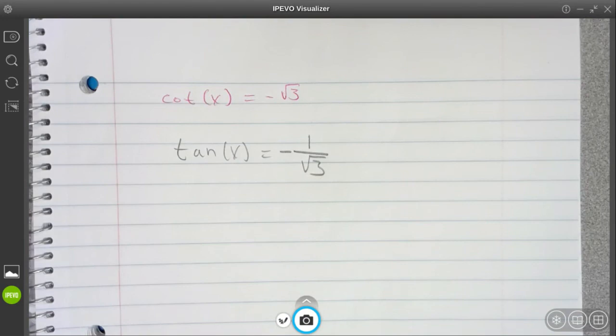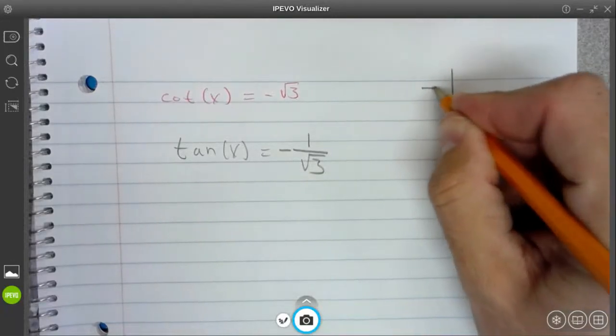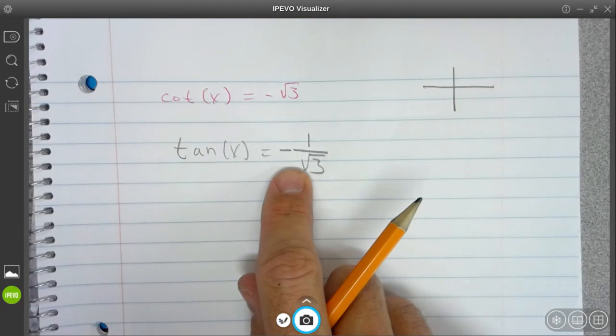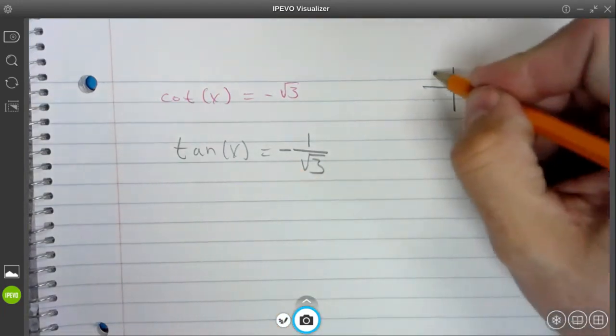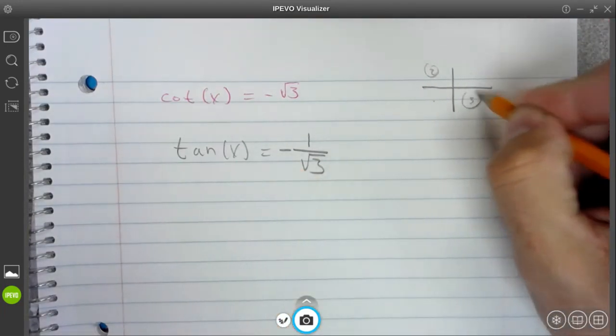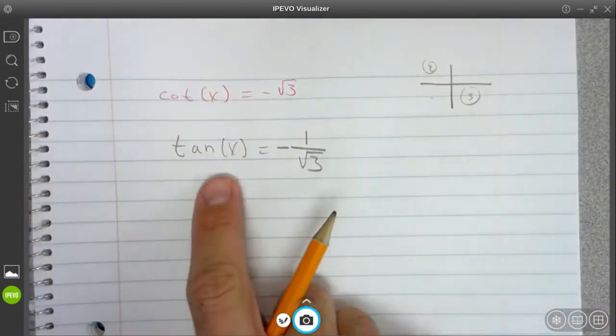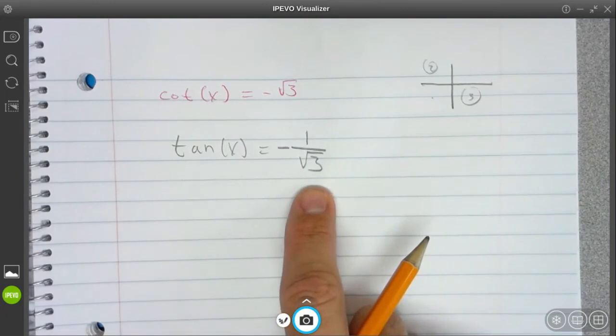So because tangent is negative, I know that means it can't be these two quadrants. It's got to be in quadrant 2 and quadrant 3. Here we go. I want tangent to give me 1 over root 3.